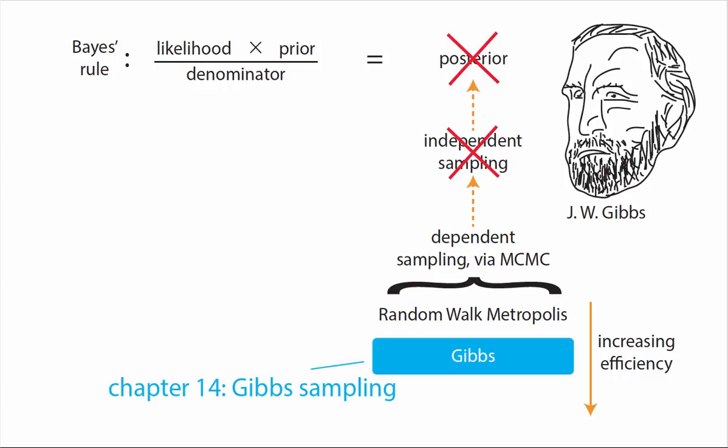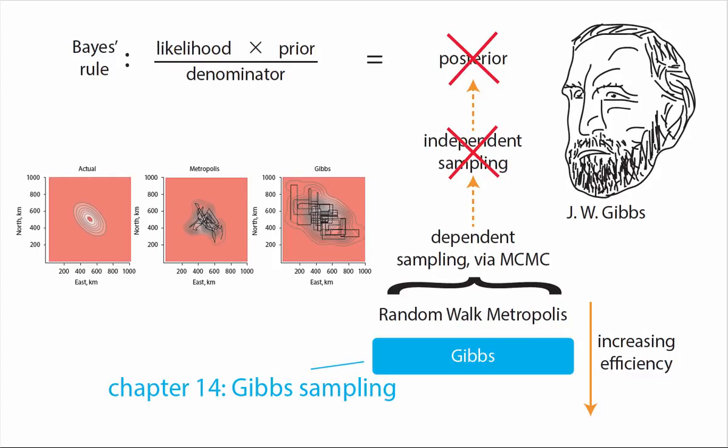In chapter 14 I discuss a more recently created method of doing MCMC known as Gibbs sampling, which tends to be a slightly more efficient way of understanding the posterior distribution.